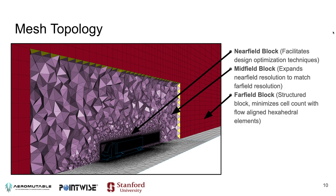The midfield block takes that high resolution and quickly expands it to a lower resolution area found in the far field, saving computational time by not focusing resolution where it isn't needed. In the far field, we used a structured block to minimize the number of cells required in that area, with flow-aligned hexahedral elements growing from the midfield all the way to the far field.